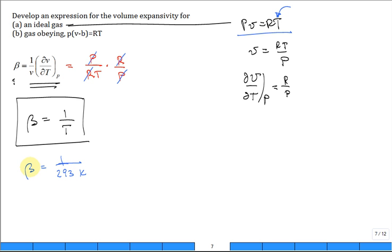Notice the units on this are inverse Kelvin. That's the units of beta. Inverse Kelvin. Now, once you've done it for an ideal gas, you can now do it for a gas obeying this equation.